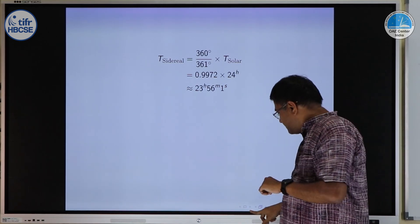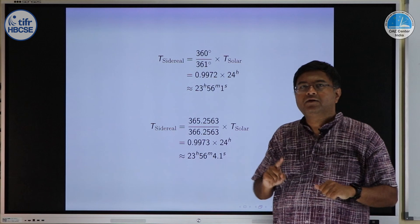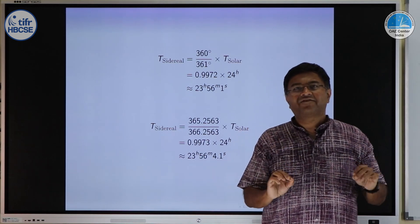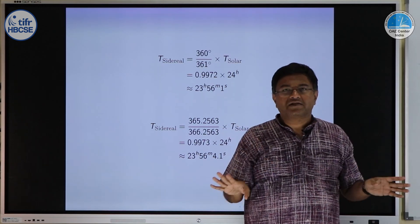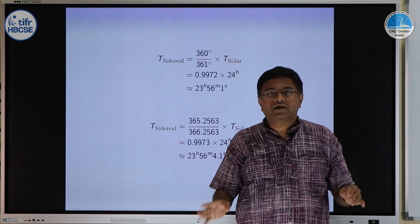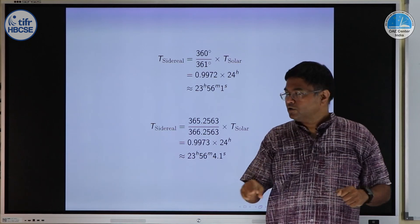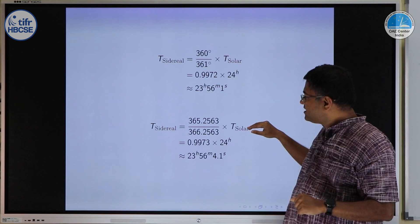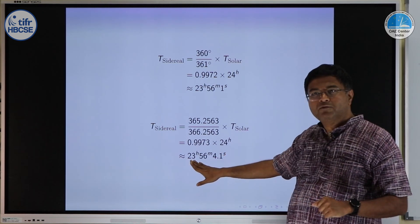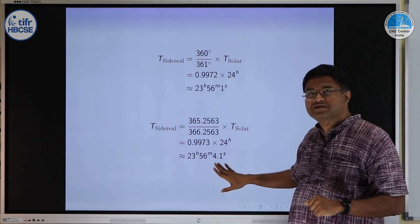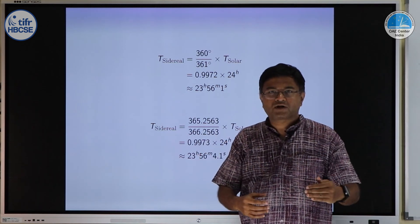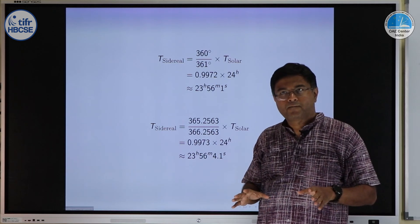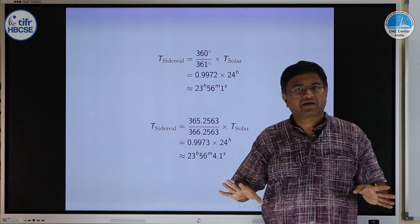If you use that, in one revolution period of earth, there are 365.2563 solar days. But number of sidereal days should be one extra, so 366.2563. Multiply by Tsolar, calculate, you get 23 hours, 56 minutes, 4.1 seconds. This is almost equal to the actual rotation period of earth. You can do more precise calculation and you can get slightly better answer.